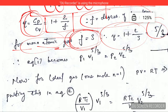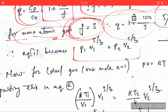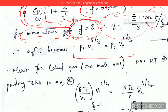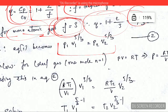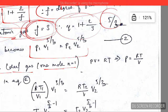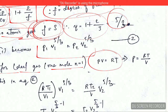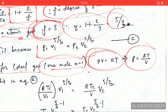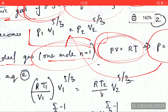Now the adiabatic equation becomes P₁V₁^(5/3) = P₂V₂^(5/3). For one mole of an ideal gas, we have PV = RT. From this ideal gas equation I can calculate the value of pressure, and I will plug this into the adiabatic equation accordingly.